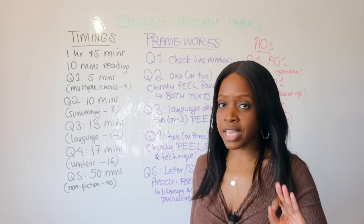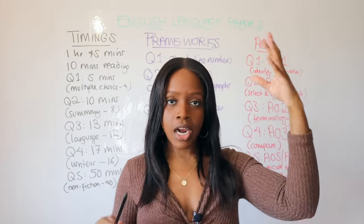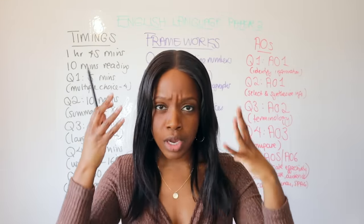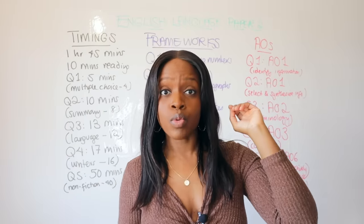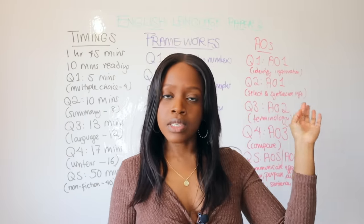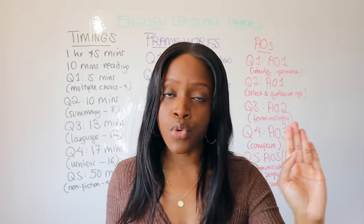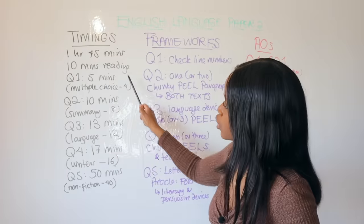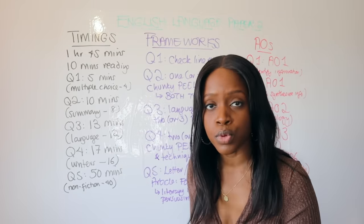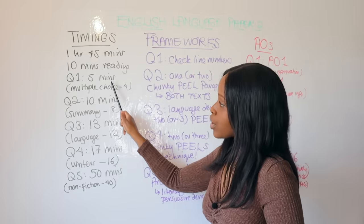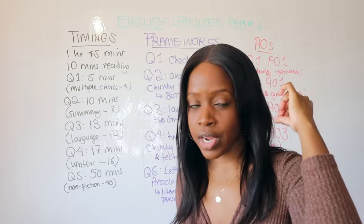Spend the first 10 minutes flicking through the question paper, getting a lay of the land, and highlighting the keywords from Questions One to Five so you can process that information. Within that same 10 minutes, work on your speed reading — read through both sources, selecting the relevant bits of information that match the questions.